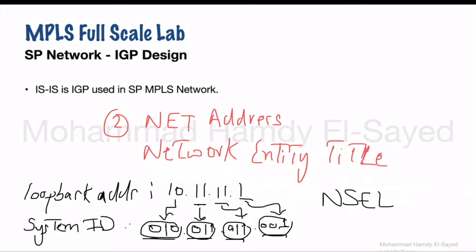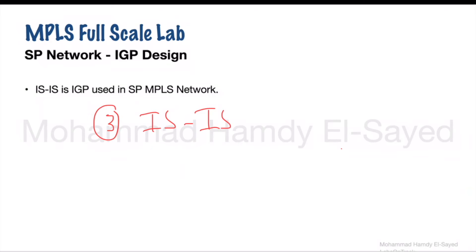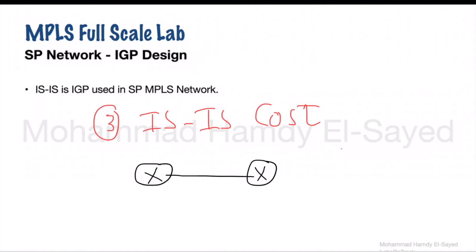The final design point is ISIS cost, or link cost. Any link between any two ISIS routers has a default cost value of 10. In the MPLS full-scale lab, any link between any two routers will use the default value of 10, and we will leave it unchanged.